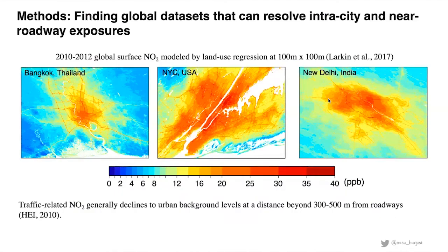Using the global NO2 picture from the land use regression model and zooming into specific cities illustrates how urban a problem NO2 is — concentrations are much higher in urban areas, particularly near roadways. We need to go beyond the current spatial resolution of satellite sensors to finer resolution to capture population exposure particularly near roadways, and that is where the land use regression model is essential.